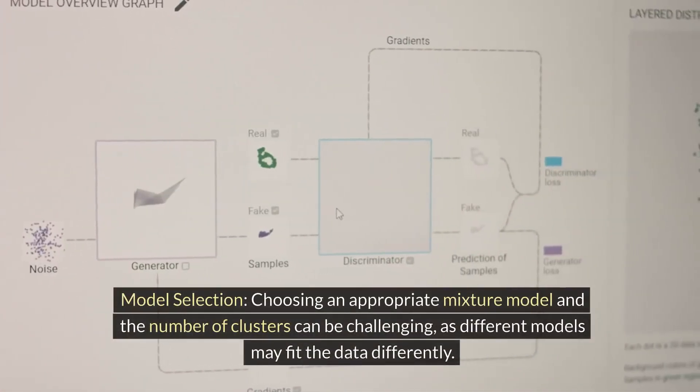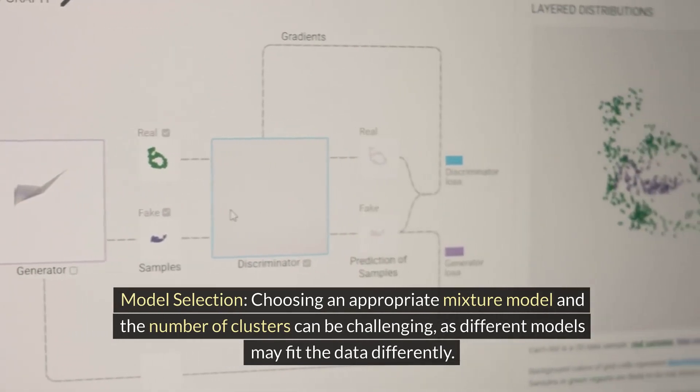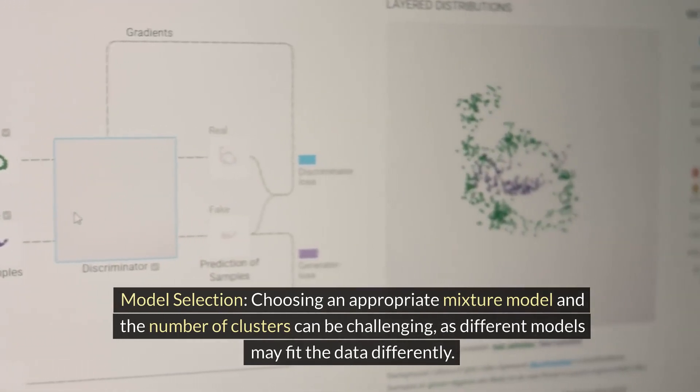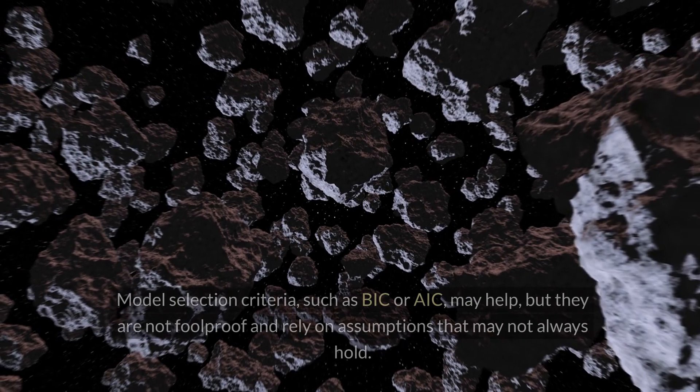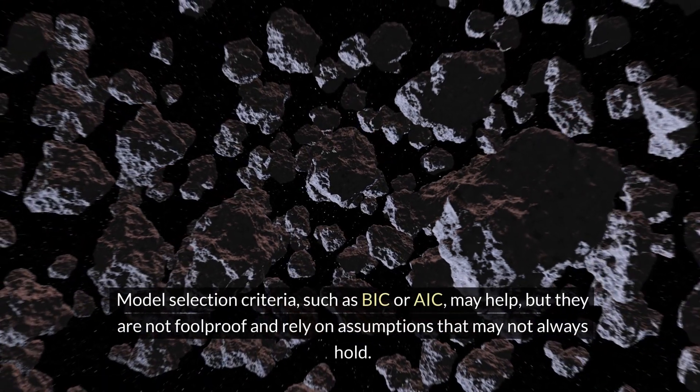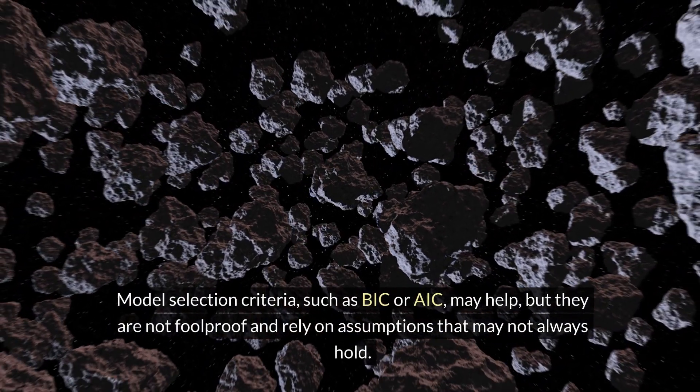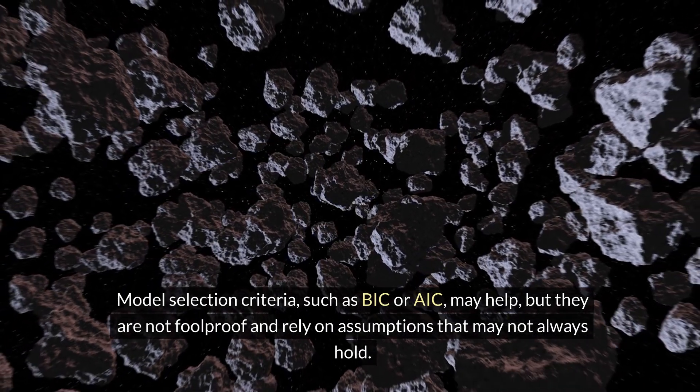Model selection. Choosing an appropriate mixture model and the number of clusters can be challenging, as different models may fit the data differently. Model selection criteria, such as BIC or AIC may help, but they are not foolproof and rely on assumptions that may not always hold.